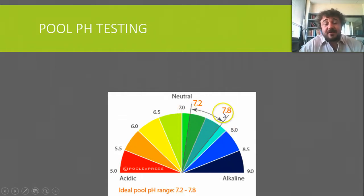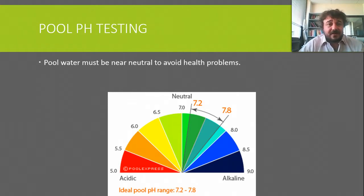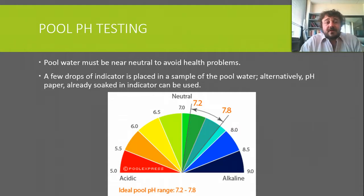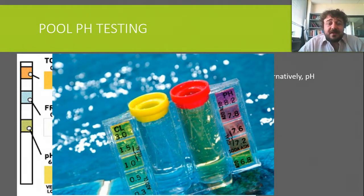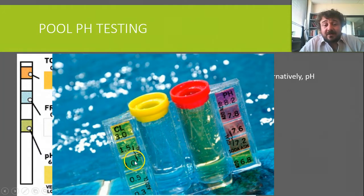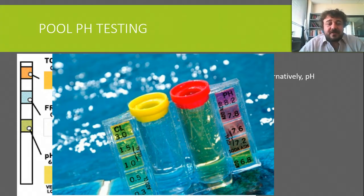Pool testing. This is the range you want your pool in — it's a little bit basic but still pretty close to neutral. Pool water needs to be near neutral, otherwise it causes problems. When you go swimming and your eyes start to hurt, it's because there's too much chlorine in the water, so you need to keep it fairly neutral. We use a few drops of indicator inside a sample of pool water, or we can use pH paper or a pH meter. This is the sort of pH paper you would use — it's got the pH end and the free chlorine end. You mix the sample in and you can see the colour. If it's too far on one side, you add chlorine; if it's too far on the other, you add soda ash, and this gets us back to the neutral area.